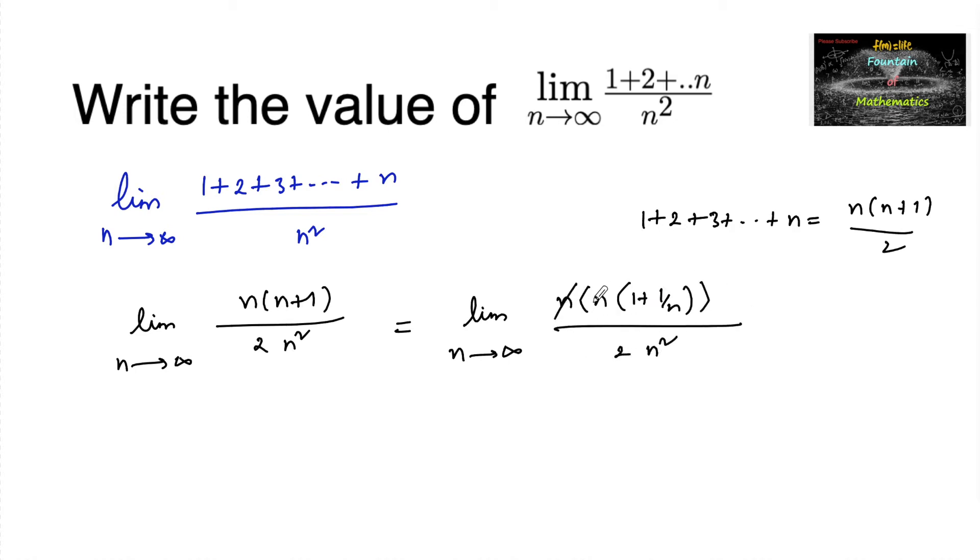So we can cancel n and n square, so we have limit n tends to infinity: 1 plus 1 upon n, divided by 2. As n tends to infinity.